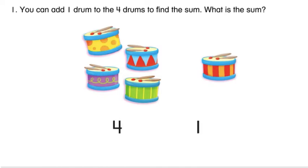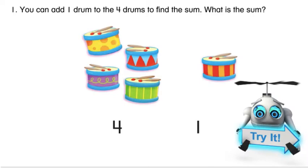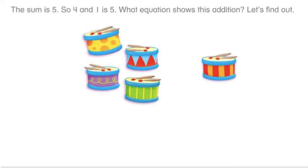You can add one drum to the four drums to find the sum. What is the sum? The sum is five. So four and one is five.